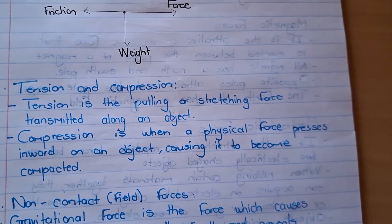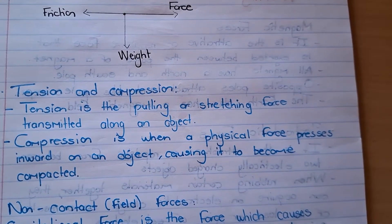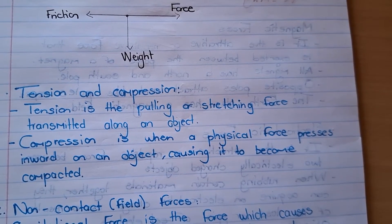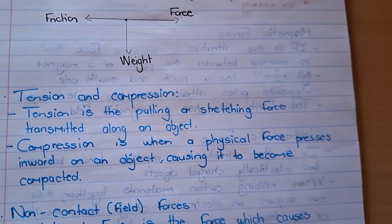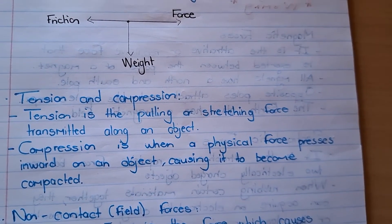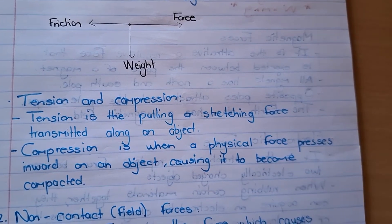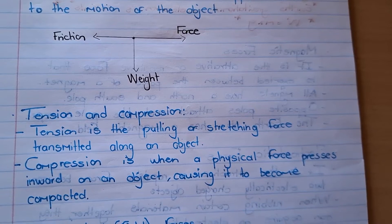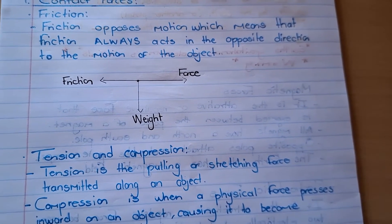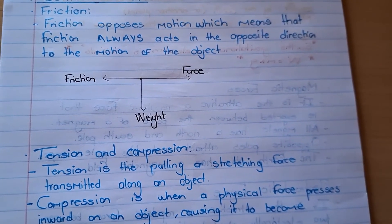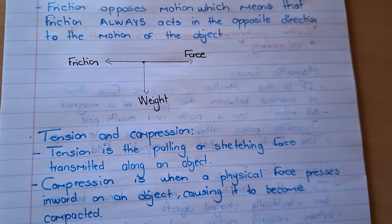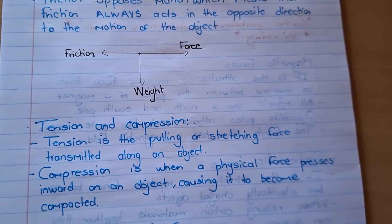Compression is when a physical force presses inward on an object, causing it to become compacted. Think of a spring — when you squash it together it becomes small, and when you release it, it becomes big again. All of these — friction, tension, and compression — are contact forces because they involve objects literally touching one another: the grass and ball, the table and floor, hands and rope, hands and spring.